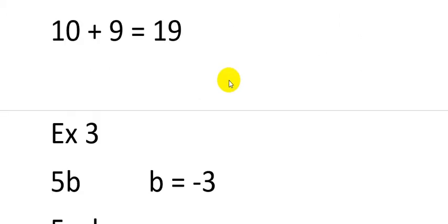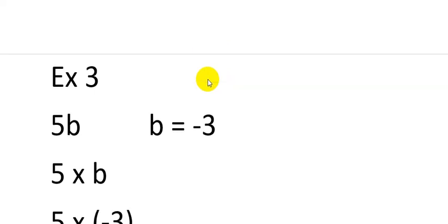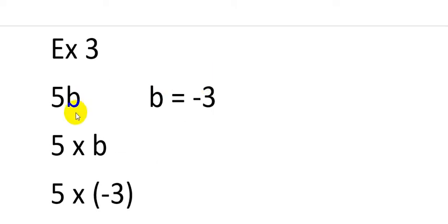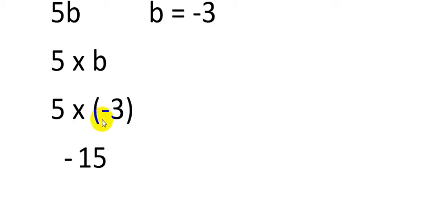Our first two examples used positive values. Now let's take some negative values and see how substitution works. In this example the algebraic term is 5b and the value of b equals minus 3. We write 5 multiply by minus 3. It is always preferred that you write negative values within brackets, so the plus symbol carries with 5 and the minus symbol is with 3.